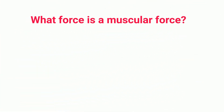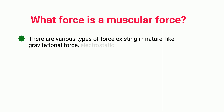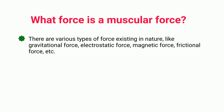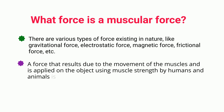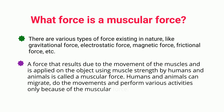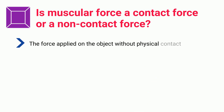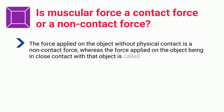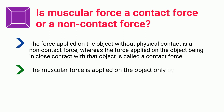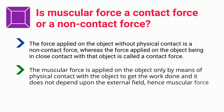Frequently asked questions: What type of force is muscular force? There are various types of force in nature such as gravitational force, electrostatic force, magnetic force, and frictional force. A force that results due to the movement of muscles and is applied on an object using muscle strength by humans and animals is called a muscular force. Humans and animals can perform movements and activities only because of muscular force. Muscular force is a contact force, as it is applied only by means of physical contact with the object and does not depend upon an external field.